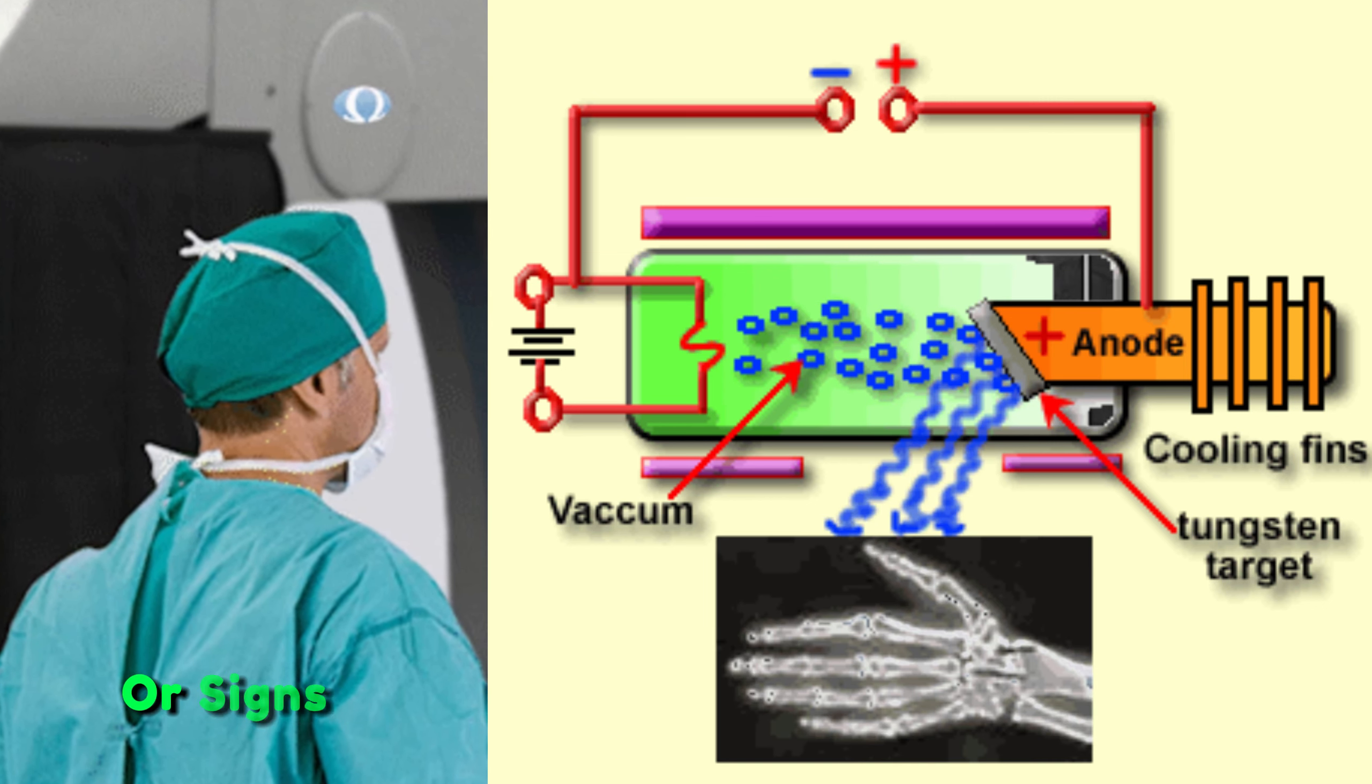Collimator and beam alignment. Ensure that the collimator is functioning correctly and that the x-ray beam is properly aligned. Misalignment can result in unnecessary radiation exposure and poor image quality.